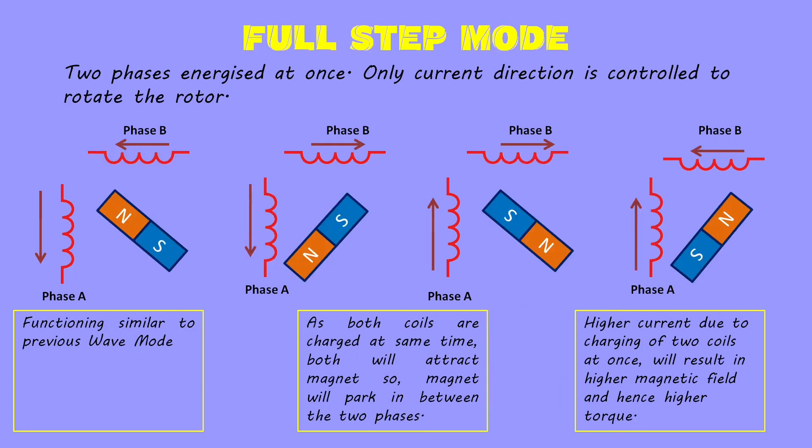Full step mode: in this mode, two phases are always energized at the same time. Functioning is quite similar to the previous mode. The only difference is that the parking position of the rotor in each step will be the middle point between the two coils, as both coils try to align the rotor with themselves. As two coils are being charged at once, higher current results in a higher magnetic field and hence higher torque.